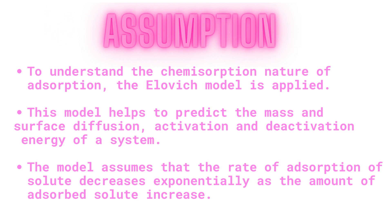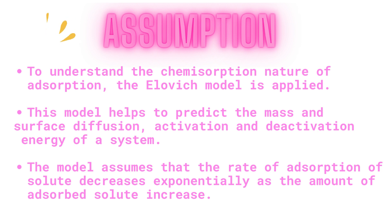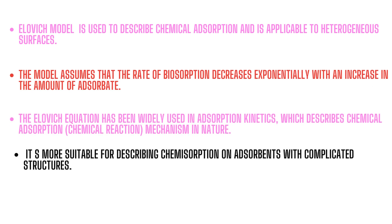Main assumptions. To understand the chemisorption nature of adsorption, the Elovich model is applied. This model helps to predict the mass and surface diffusion, activation and deactivation energy of a system. The model assumes that the rate of adsorption of solute decreases exponentially as the amount of adsorbed solute increases. This model is used to describe chemical adsorption and is applicable to heterogeneous surfaces.